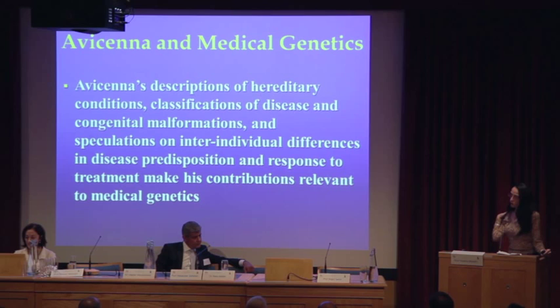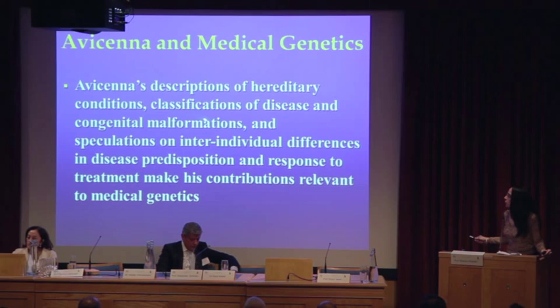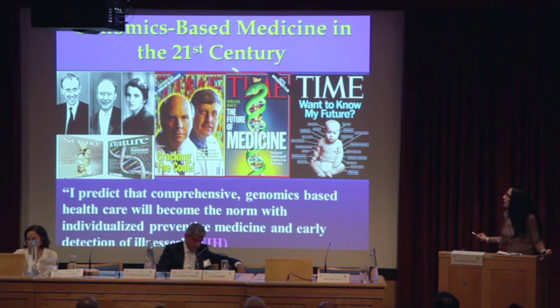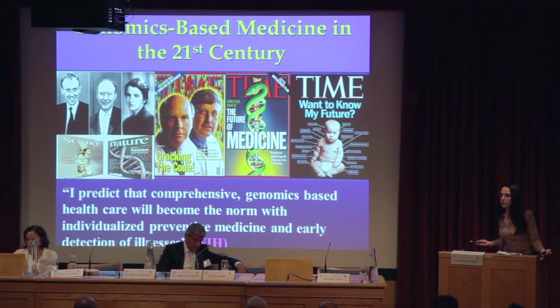Just to conclude: Avicenna was unaware of genes as units of inheritance. However, through careful observations and descriptions of hereditary conditions, classifications of disease and congenital malformations, and speculations on inter-individual differences in disease predisposition and response to treatment, his contributions were highly relevant to medical genetics. A millennium later, we have made great strides in understanding the biologic basis for those early observations, and in elucidating the mechanisms involved in not only single-gene disorders but also complex disorders with multiple genetic and environmental factors.